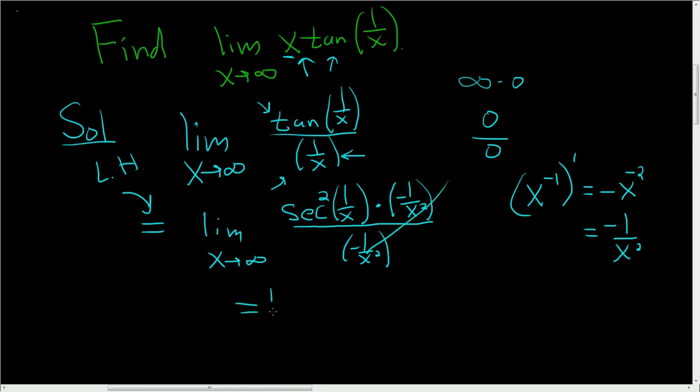All right. At this point, I think it's clear what the limit is. So this is the limit as x approaches infinity of secant squared of 1 over x. And as x approaches infinity, let's think about this. As x approaches infinity, 1 over x approaches 0.